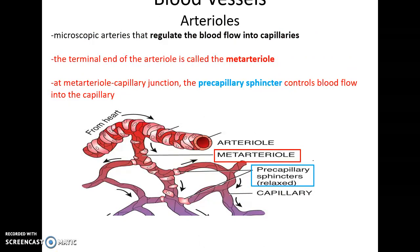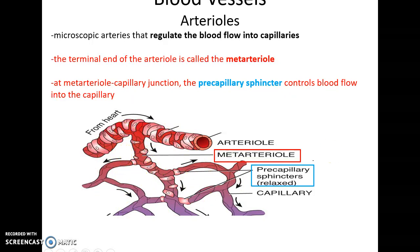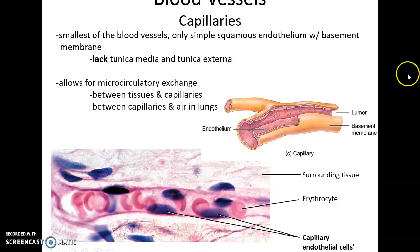Arterioles branch and branch until they become, at their very end, the meta-arteriole, which then passes blood to the capillaries. The meta-arterioles have little pre-capillary sphincters that control the flow of blood into these capillaries.